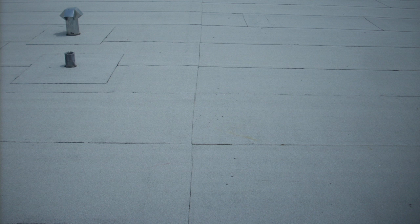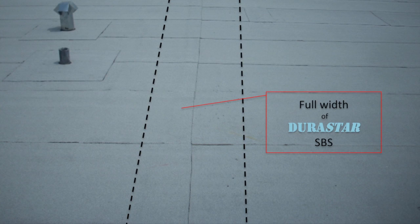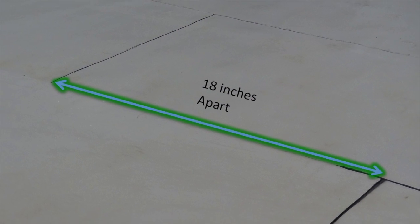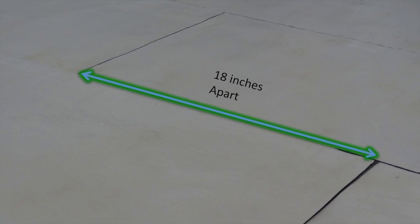If end laps fall in line or are not staggered the proper distance, a full width of Durastar SPS membrane must be installed over the end laps. All sides and end laps must be staggered from underlying plies.